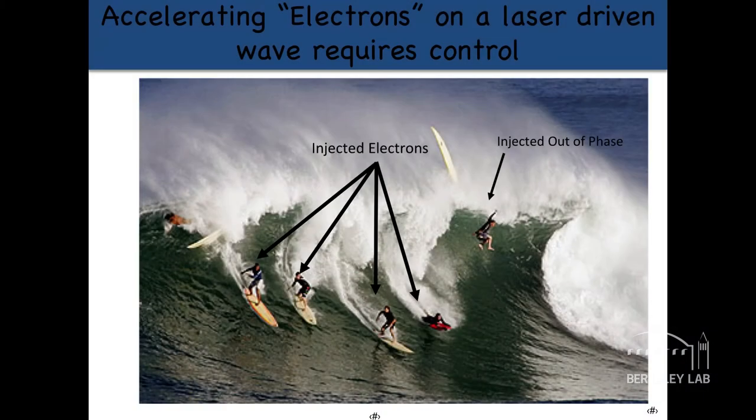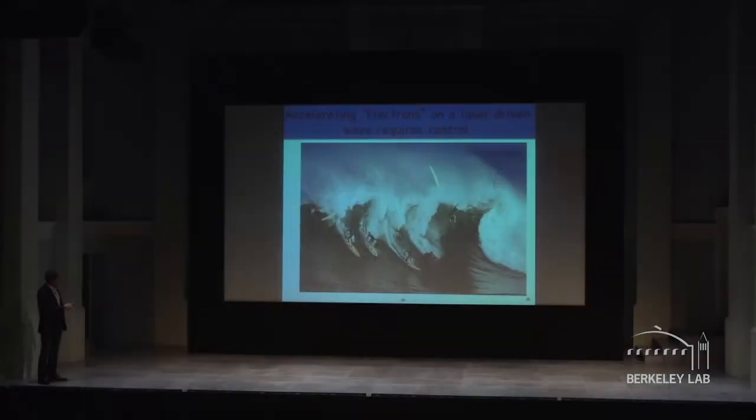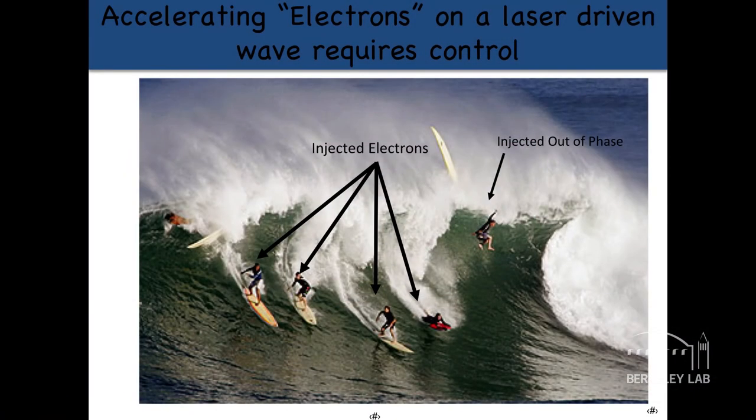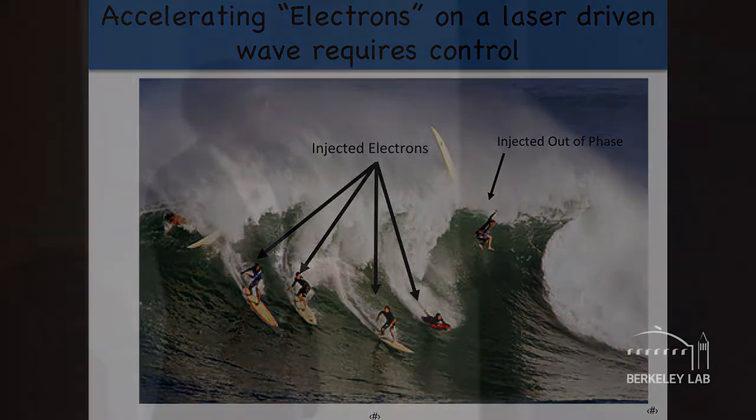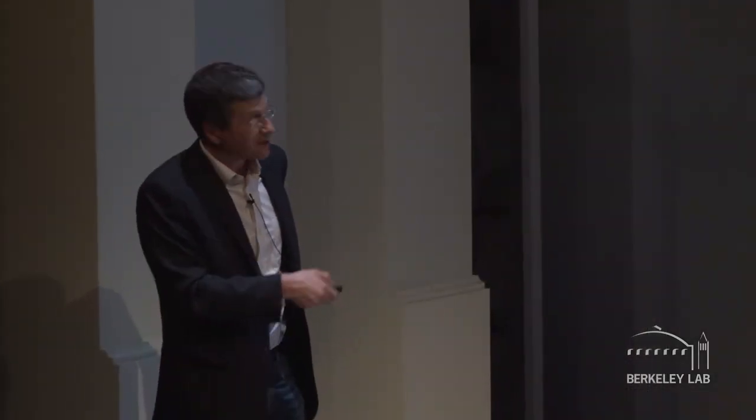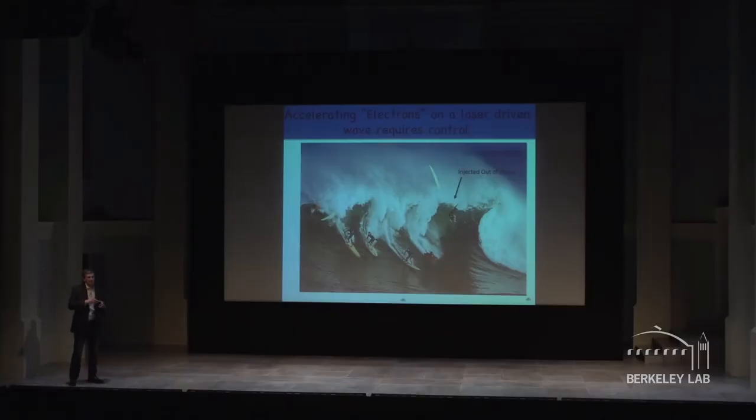So now to do this correctly you have to have some control because you have this wave. How do you get your surfers onto this wave? And that's the tricky part. So if you look at these guys here they're beautifully riding this wave. We're exciting it. And we call these the injected electrons. And then you have this unlucky fellow here. He's injected out of phase. He ain't making it today. So we use these guys and that takes really good control of all of these laser properties and plasma properties etc. And so it takes a lot of work.